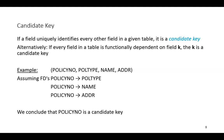An example from an insurance application: suppose we had a table that consisted of a column called policy number, policy type, name, and address. Assuming there's a functional dependency where policy number functionally determines policy type, policy number functionally determines name, and policy number functionally determines address — then policy number is the field K that functionally determines all of the other columns. Therefore, we can conclude that policy number is a candidate key.